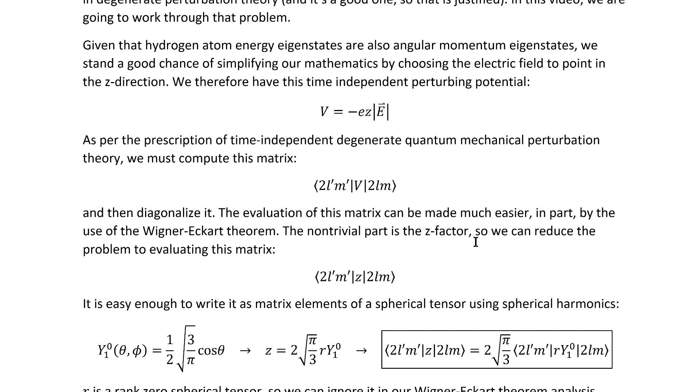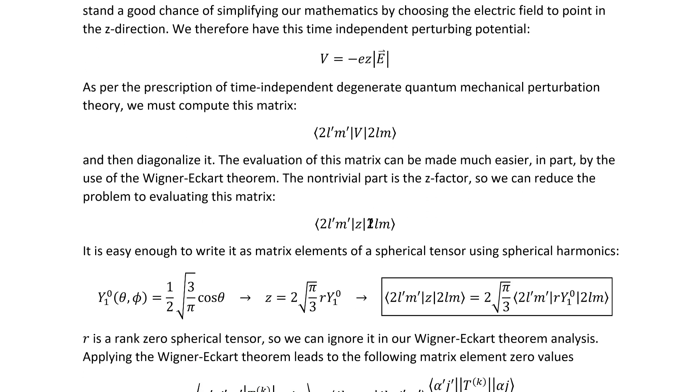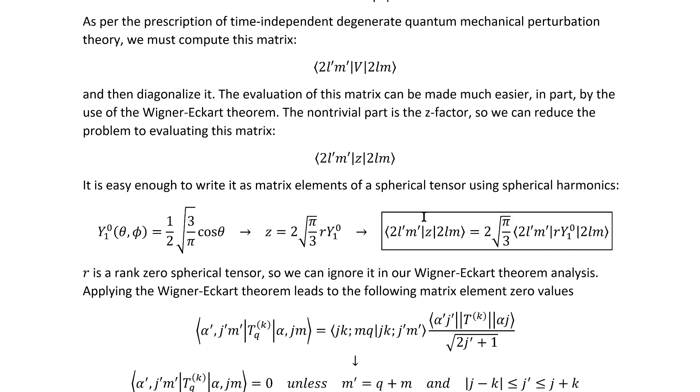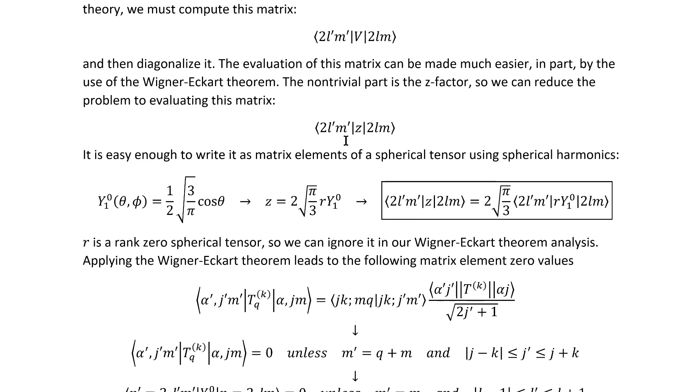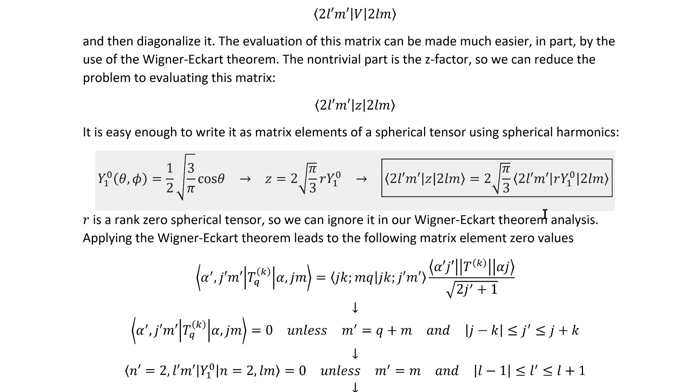The only non-constant part of this matrix element is the z-factor, so we can focus in on this matrix specifically. Now, the evaluation of this matrix element can be made much shorter in part by using Wigner-Eckart theorem, so we need to work out how to express z in terms of spherical tensors. Turns out that's pretty easy to do with ordinary spherical harmonics. We arrive at this matrix element.